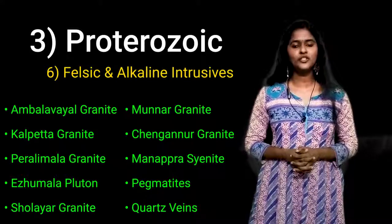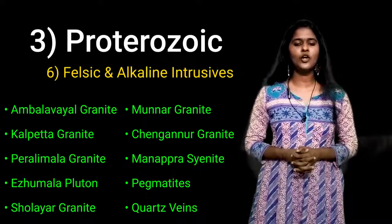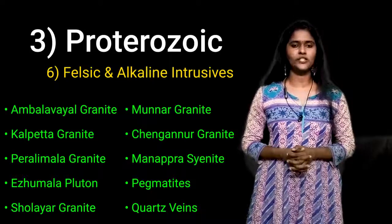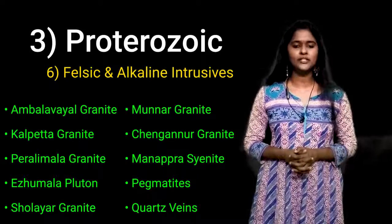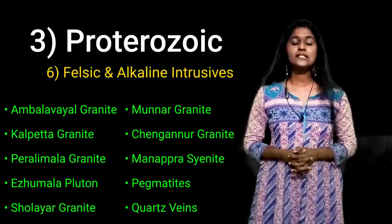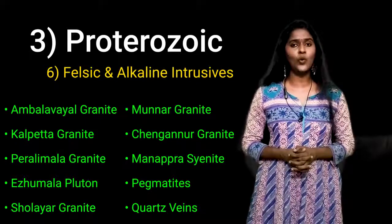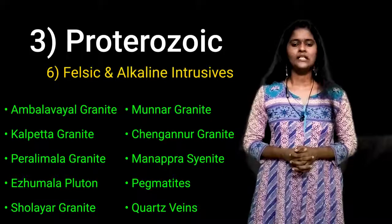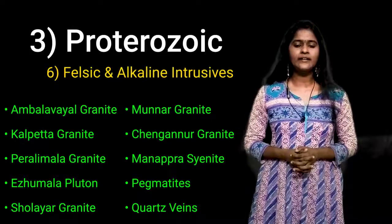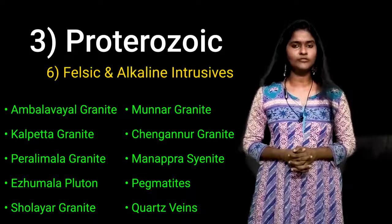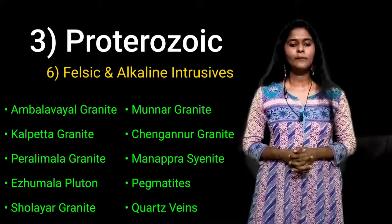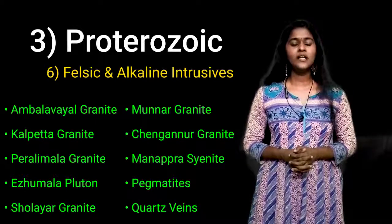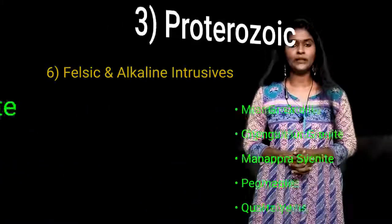Maniyaprasad syenite — a northwest-southeast body covering 8 square kilometers. Pegmatites are observed in the felsic groups in Kerala. Quartz veins — thin and discontinuous veins are found in Attapadi Valley, Nilambur Goldfield and Manuka 1 to 8 of Malappuram.